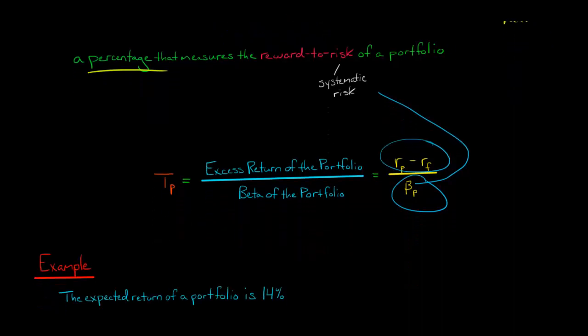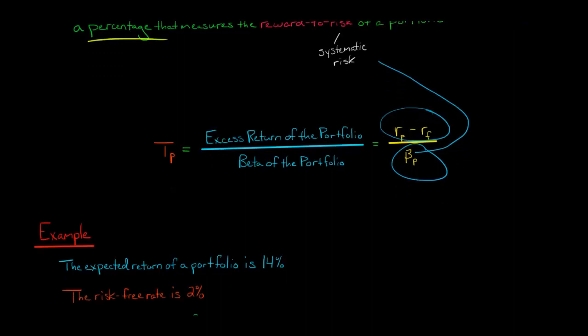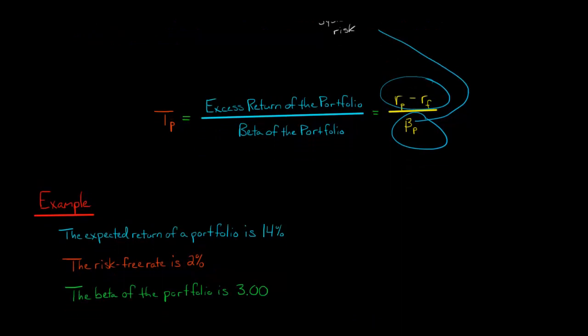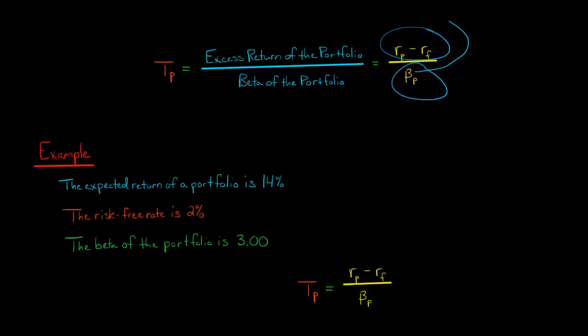Let me do a quick example and show you how it works. We've got an expected return of the portfolio. Let's say it's 14% for some portfolio. We're trying to figure out the Treynor ratio. We also need to know the risk-free rate of return, which is 2%. Let's say that the beta of the portfolio is 3. Now we know everything we need to calculate the Treynor ratio.